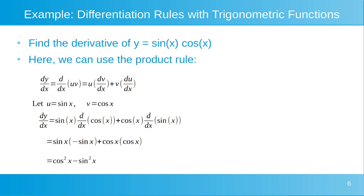When we substitute those derivatives in, dy/dx equals sin x multiplied by minus sin x, plus cos x multiplied by cos x. When we multiply that out, dy/dx equals cos squared x minus sin squared x. The key point here is that we can use our other differentiation rules with trigonometric functions as well — the quotient rule, the sum rule, the difference rule, or the others. Using these differentiation rules with trigonometric functions is valid.